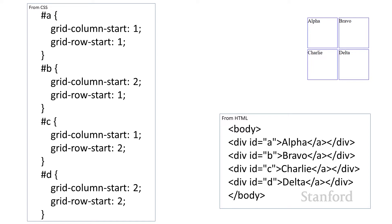If you want one of the elements to not show up — for example, you've got it set up for a desktop but it's being displayed on a tablet and you don't have space for everything and don't want scrolling — you can use display none on one of these elements and it will just completely disappear.